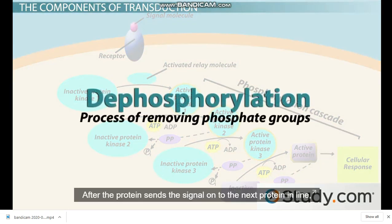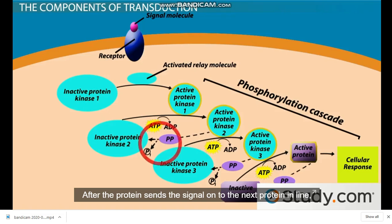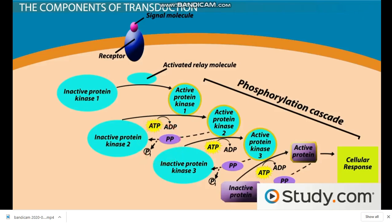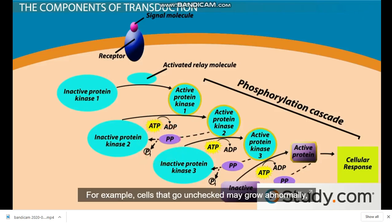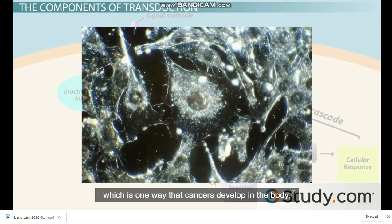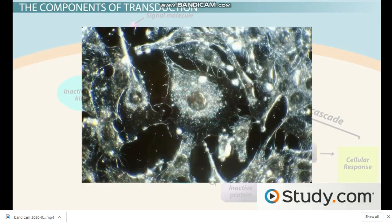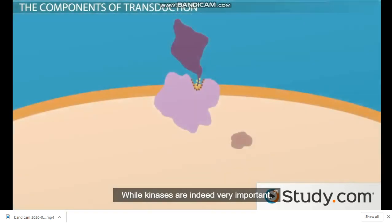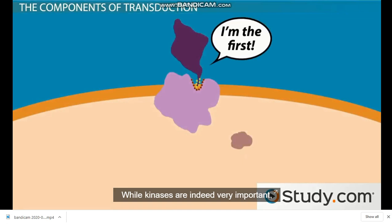After the protein sends the signal on to the next protein in line, its services are no longer needed, so it's important to turn it off again. For example, cells that grow unchecked may grow abnormally, which is one way that cancers develop in the body. While kinases are indeed very important, other non-protein molecules serve important roles in transduction as well.